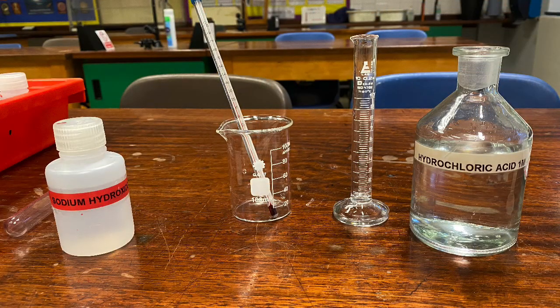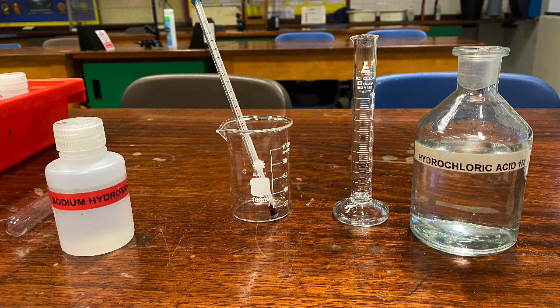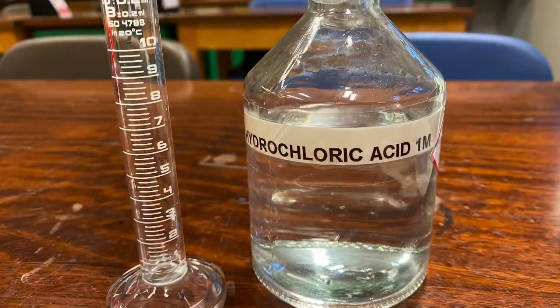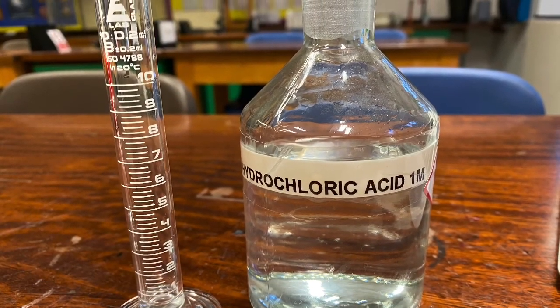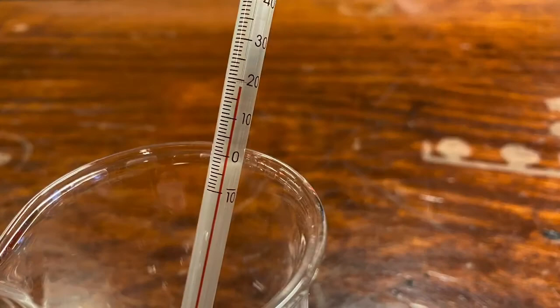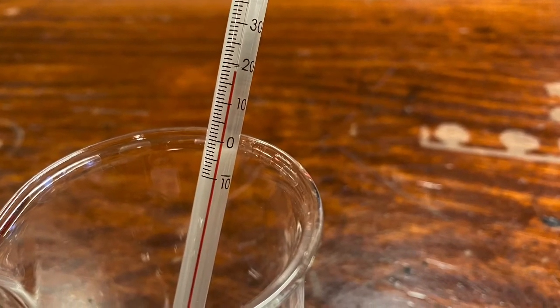For the next experiment, you'll need hydrochloric acid and sodium hydroxide. Take 10 centimeters cubed of hydrochloric acid and add it to the beaker. Then look at the temperature and note it down.